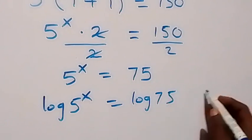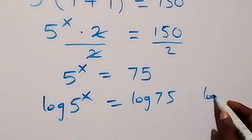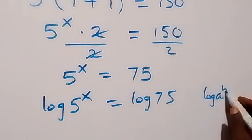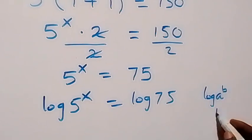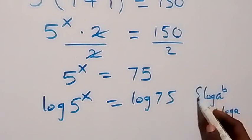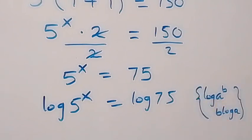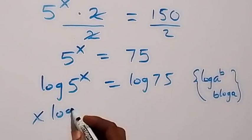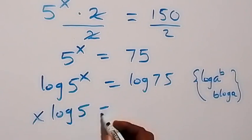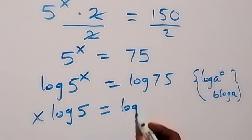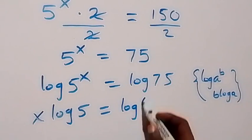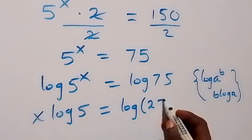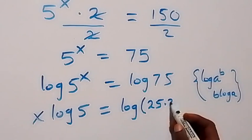Then we recall from the log rules that log a raised to power b is the same thing as b log a. Then here we have x log 5, which now equals to log of 75. We can write 75 as 25 times 3.